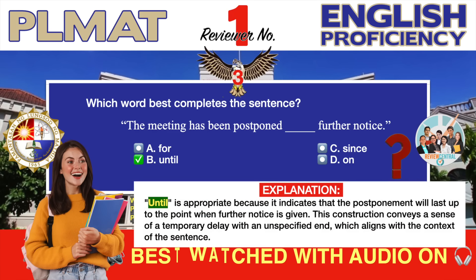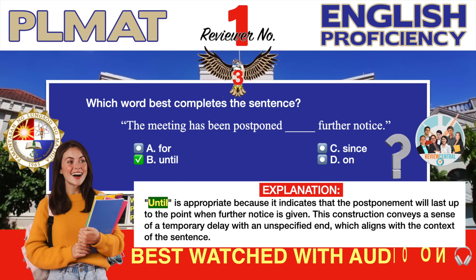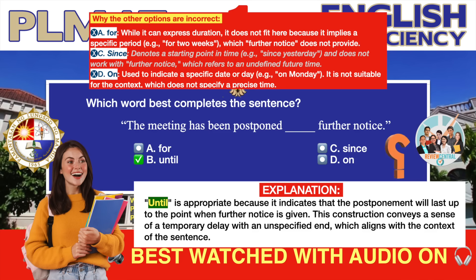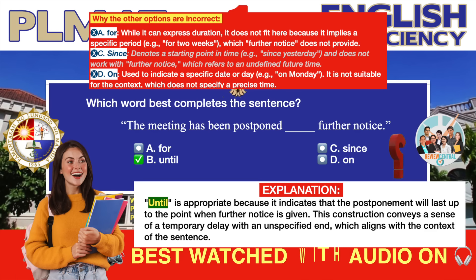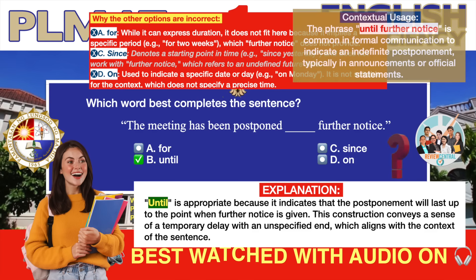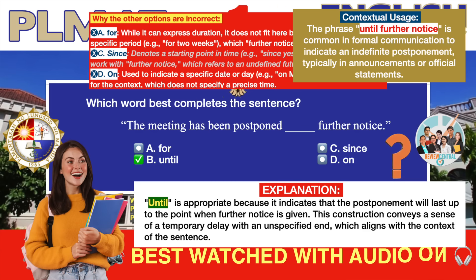This construction conveys a sense of a temporary delay with an unspecified end, which aligns with the context of the sentence. 'For' can express duration but implies a specific period such as 'for two weeks,' which 'further notice' does not provide. 'Since' denotes a starting point in time such as 'since yesterday' and does not work with 'further notice,' which refers to an undefined future time. 'On' is used for a specific date or day such as 'on Monday' and is not suitable here. The phrase 'until further notice' is common in formal communication to indicate an indefinite postponement, typically in announcements or official statements.